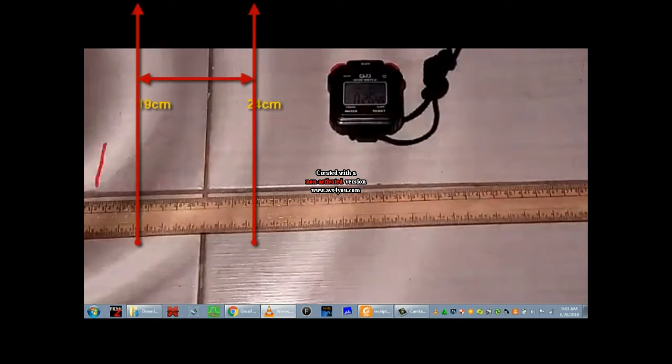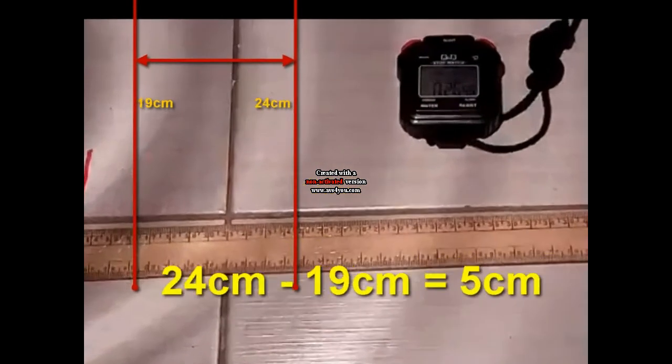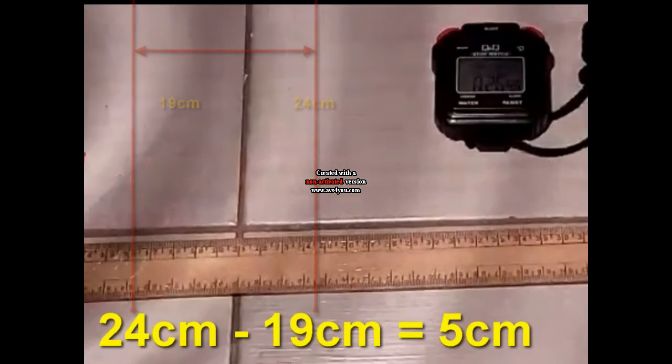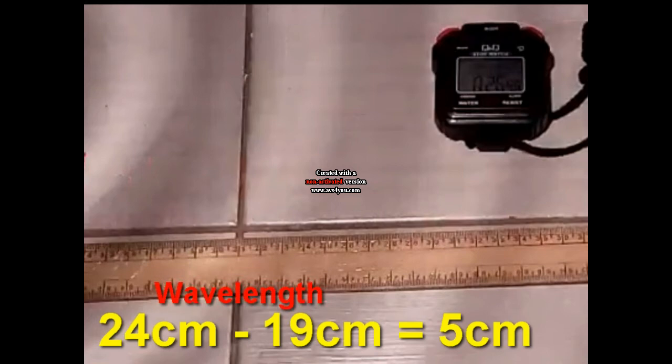We are going to consider those ones as our crests, so that we can have the wavelength, the distance between one crest to another crest, which will be 19 centimeters to 24 centimeters. To get the wavelength of this wave, then we have 24 minus 19 centimeters and that is 5 centimeters. Meaning, the wavelength of our wave here is 5 centimeters.